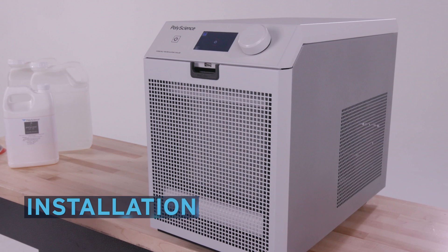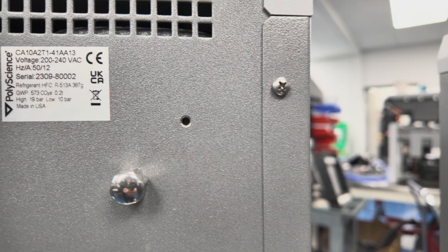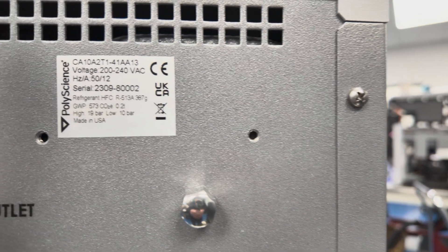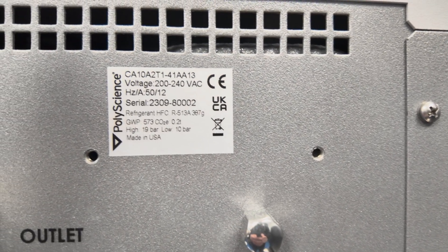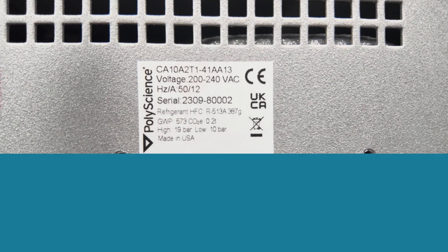Installation. When installing the chiller, first check the serial number tag to be sure you are plugging the unit into a grounded outlet with the correct voltage and frequency.